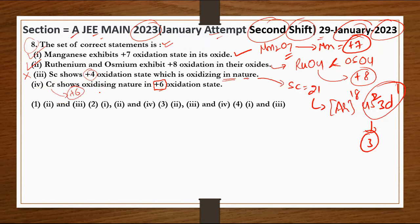तो इसका मतलब क्या है - statement one, second और fourth ठीक है। तो one, second और fourth किस में आ रहा है? Option number two में आ रहा है।